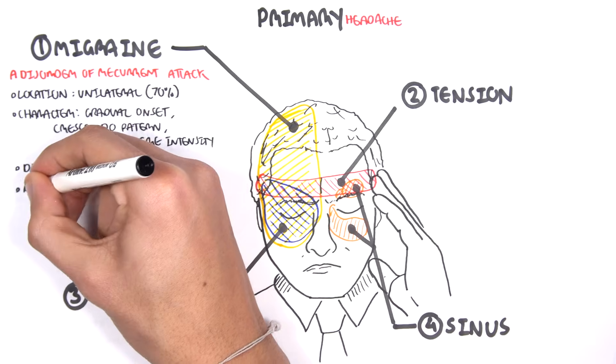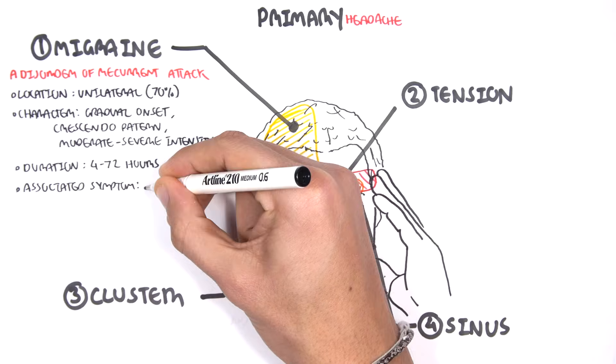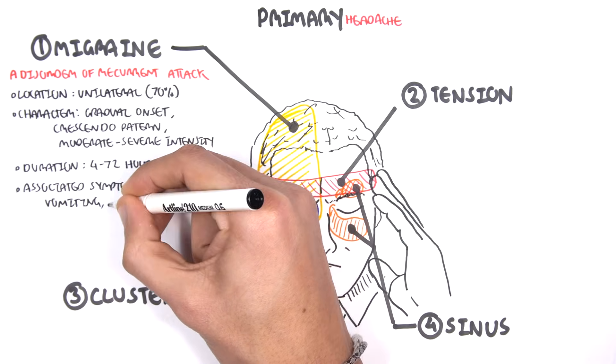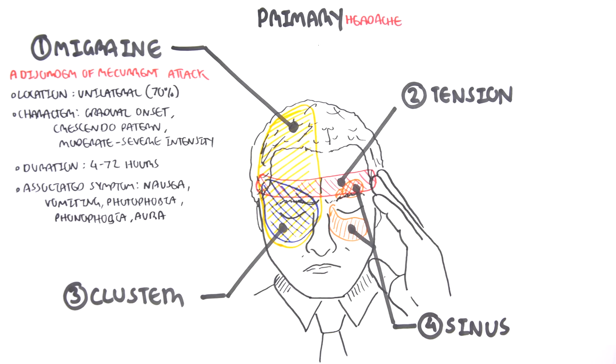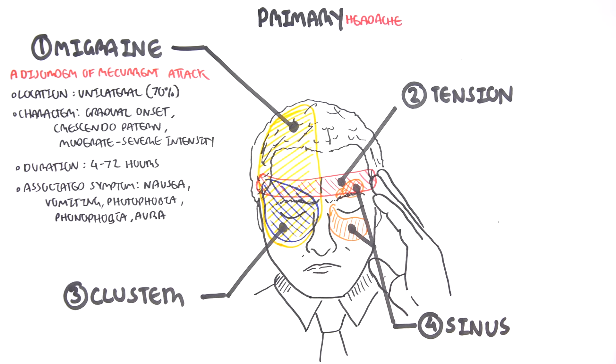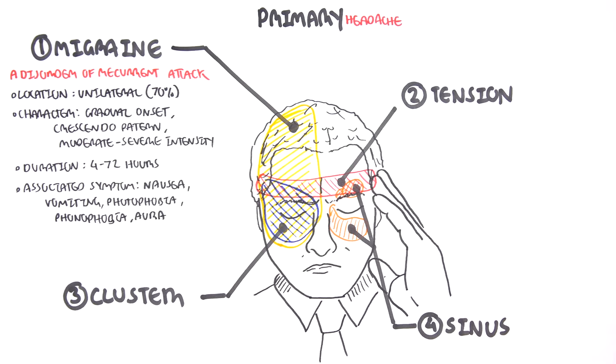Duration of the headache is between 4 to 72 hours roughly. Associated symptoms include nausea, vomiting, photophobia, phonophobia, and also aura. Aura is sort of the feeling of something about to happen, which is the intense headache.